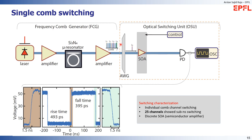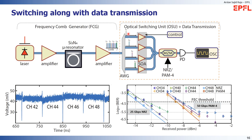After generating the soliton, we selected a single comb line using a wavelength filter, then sent it to a semiconductor optical amplifier as a wavelength selector, and detected the signal on a photodiode. As shown in the graph, we can turn this signal on and off at sub-nanosecond timescales, demonstrating that the soliton can be used as a multi-wavelength carrier for optical circuit switching. We demonstrated more than 25 independent channels switched on and off at sub-nanosecond timescales, and showed simultaneous switching of four comb channels using four different SOAs.